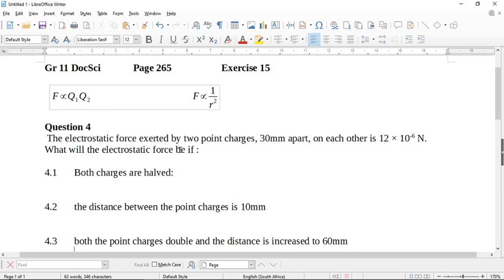So it says the electrostatic force exerted by two point charges 30 millimeters apart on each other is 12 times 10 to the negative 6 newtons.